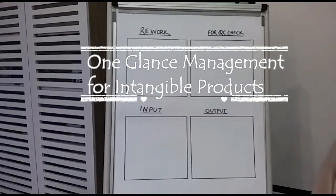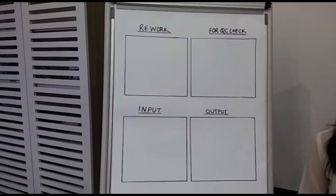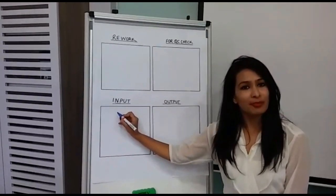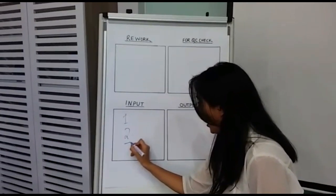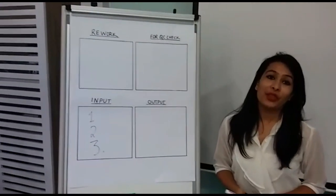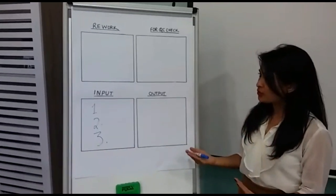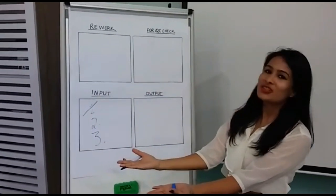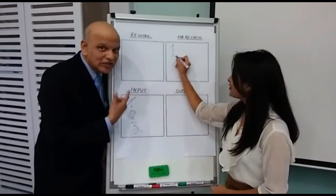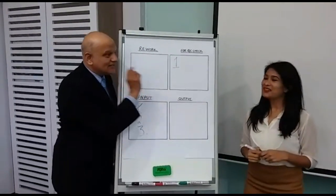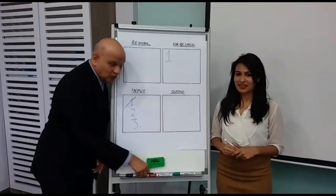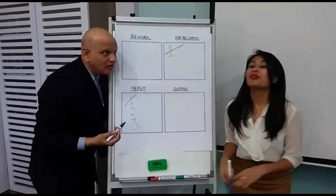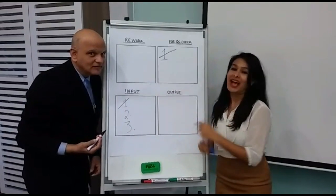Let's see how you work the flip chart. Show us please. So when I get some work, let's say I have three programs to work on, I mark them in input — one, two, and three. Now I will start working on the first program. After I complete my first program, I cross it from my input and put it for quality check. That means it goes to you, sir. Yes. And suppose you say that this is alright, then I cross it out. And where would it go? I will mark it as my final output.